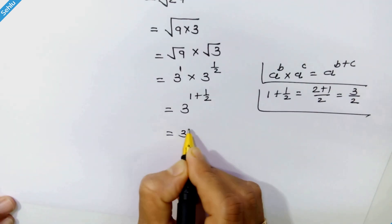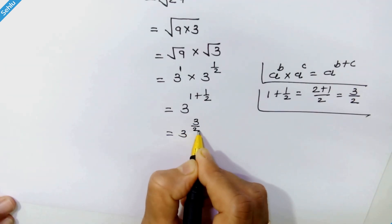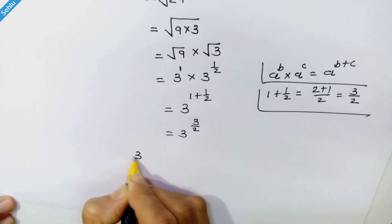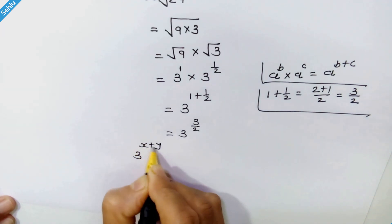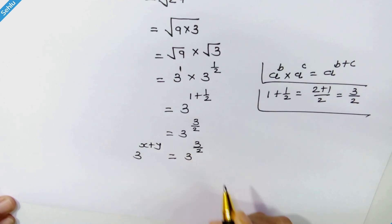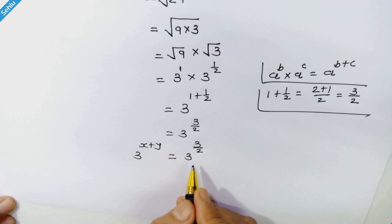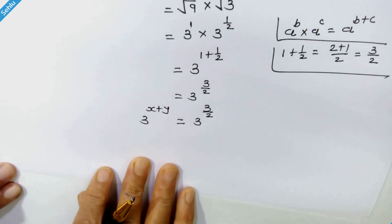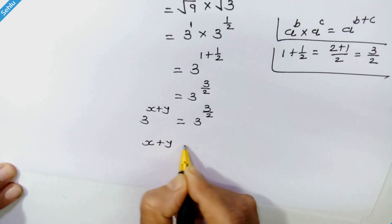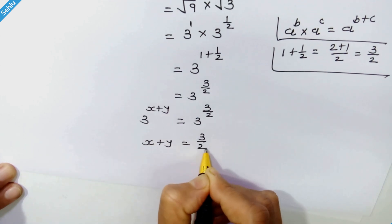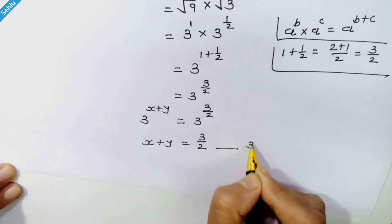So we can write 3 raised to 3 upon 2. Writing the whole equation: 3 raised to x plus y is equal to 3 raised to 3 upon 2. This equation has the same base, so their exponents can be equated. Therefore, x plus y is equal to 3 upon 2 — let's call this equation 3.